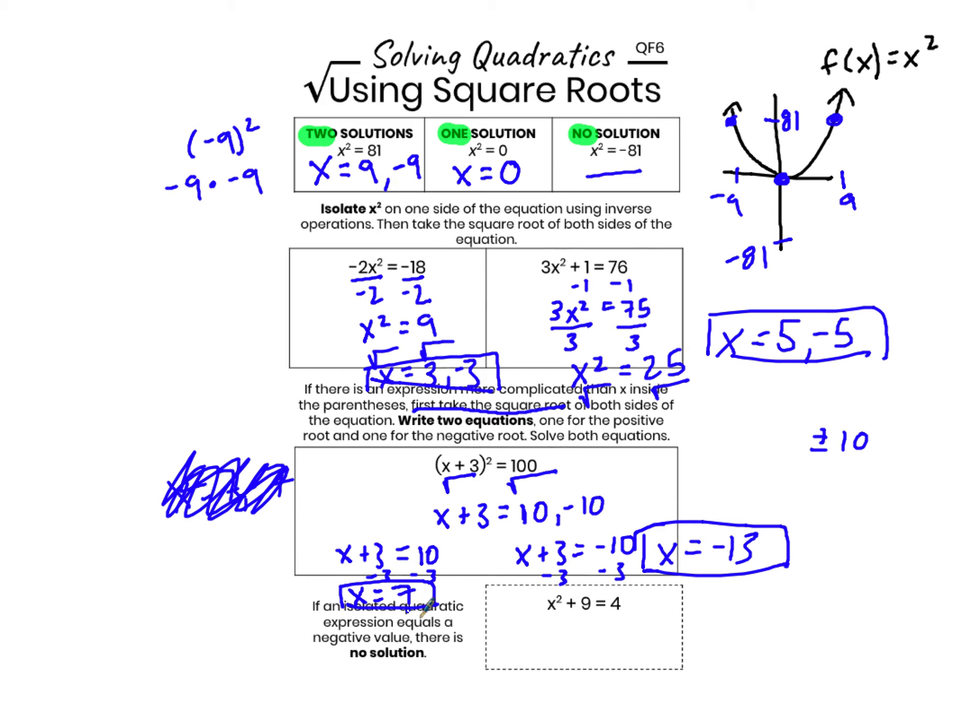Last little bit. What does this say? If when I isolate x squared and I get a negative, then this is an example of no solution.